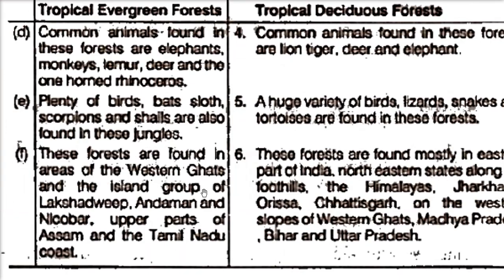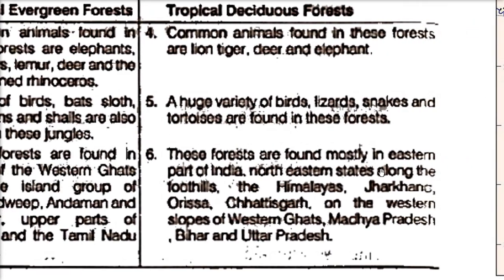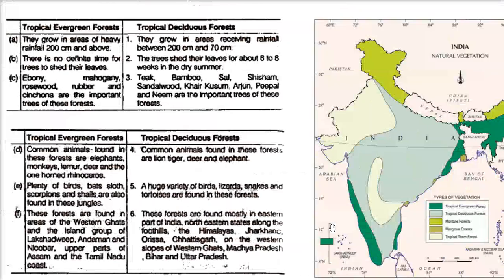Tropical evergreen forests are found in the areas of the Western Ghats, the islands of Lakshadweep, Andaman and Nicobar, upper parts of Assam, and the Tamil Nadu coast. Tropical deciduous forests are found mostly in the eastern part of India, north-eastern states along with foothills of the Himalayas, Jharkhand, Odisha, Chhattisgarh, western slopes of the Western Ghats, Madhya Pradesh, Bihar, and Uttar Pradesh.